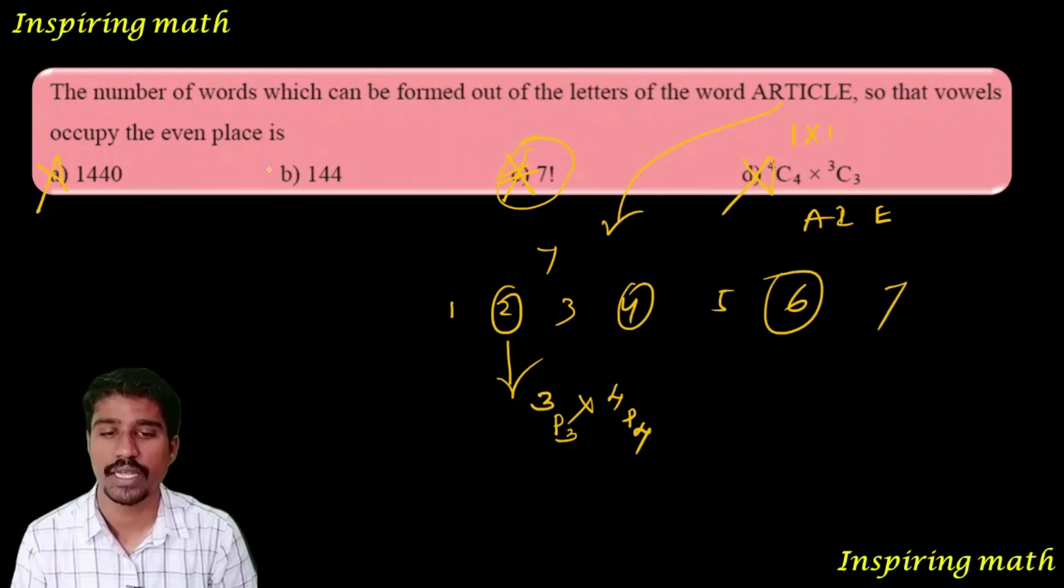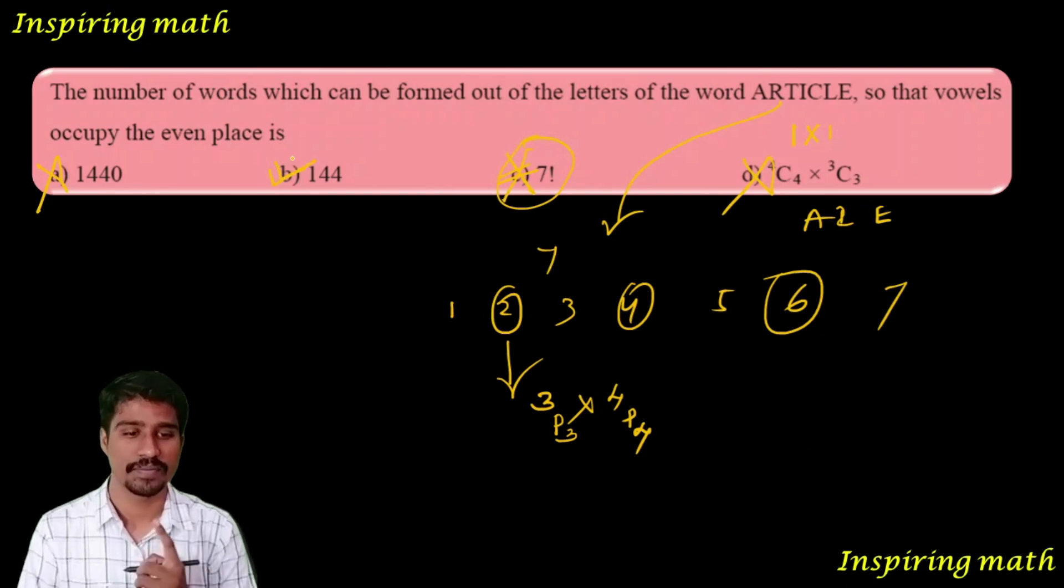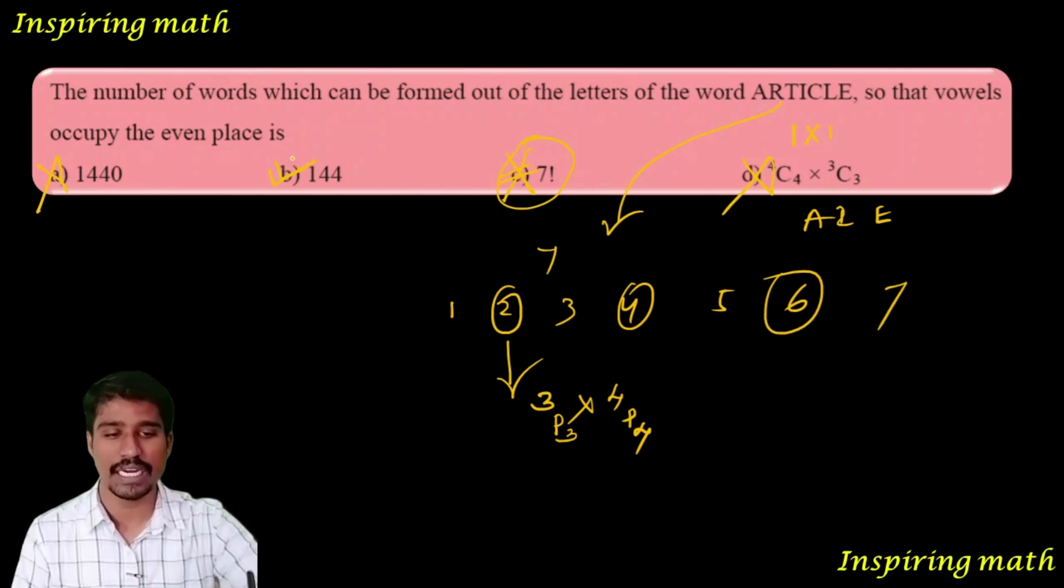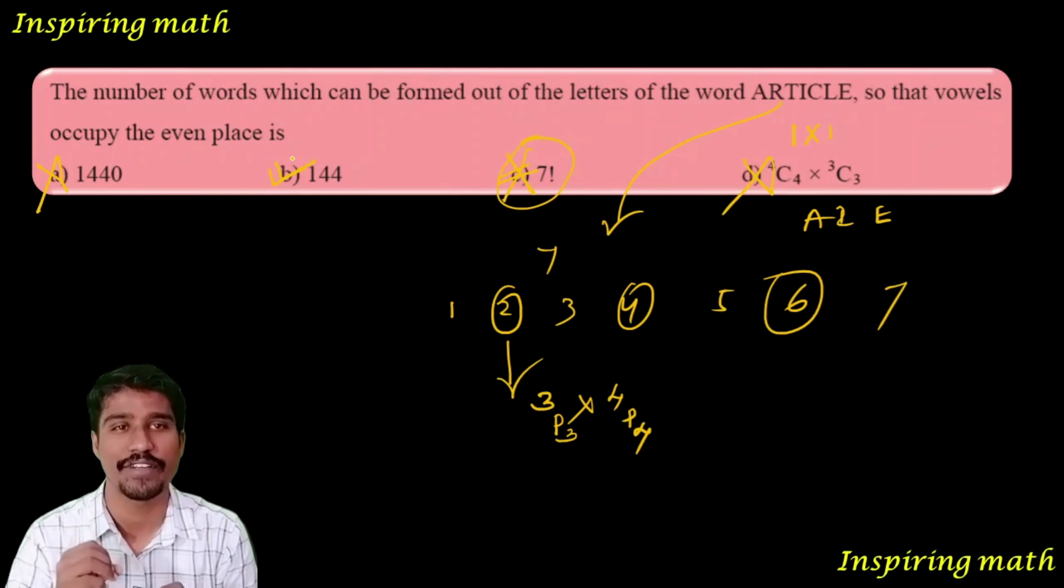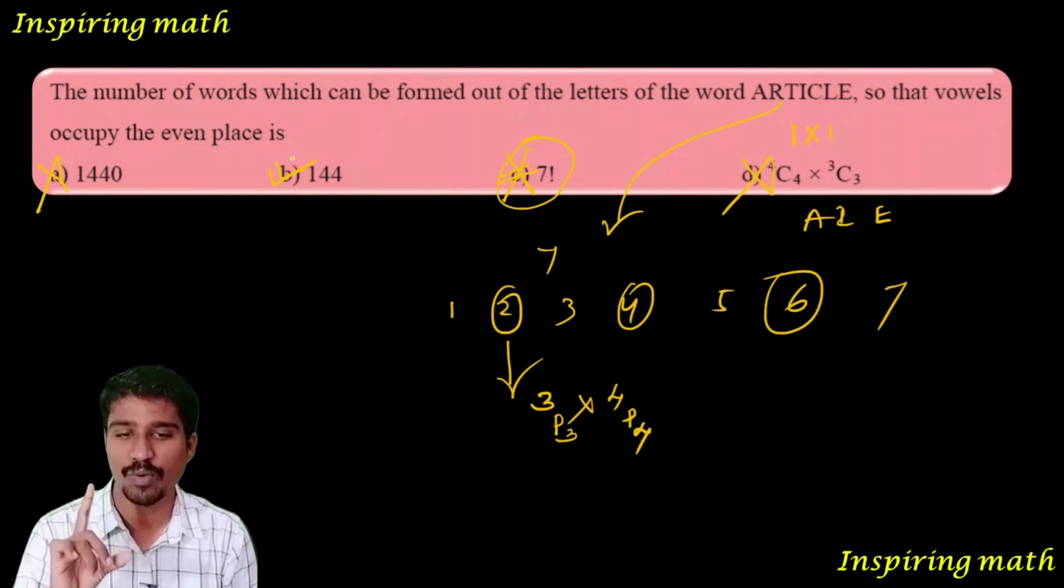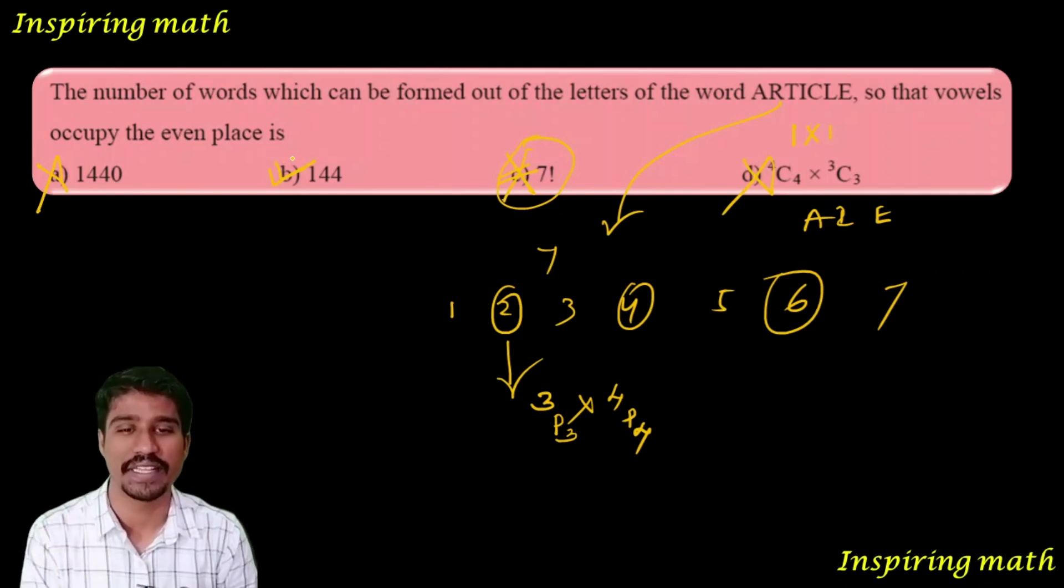Option C cannot be your answer. 4C4 times 3C3 equals 1 times 1. The factorial value is 720, giving 1440. Therefore option B is your answer.